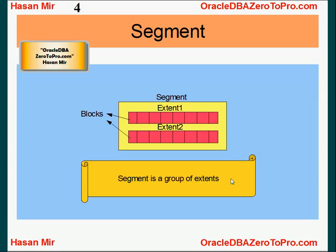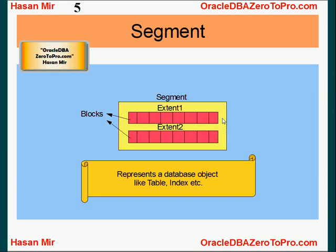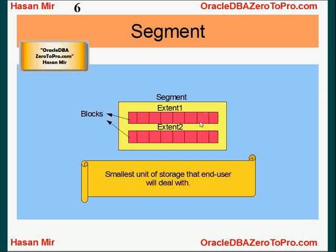What we need to understand is that a segment represents a database object like a table, index, etc. A segment would be created once you create the database object. So, segment represents a database object. Once a segment is created, initially it would have a few extents. Another thing about segment is it's the smallest unit of storage that an end user will deal with, because end users deal with tables, indexes — the database objects. So, indirectly, they're dealing with the segments.